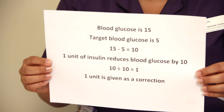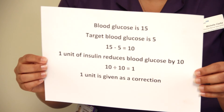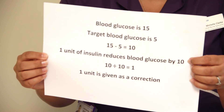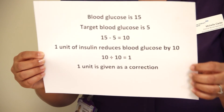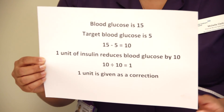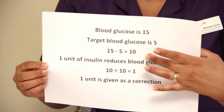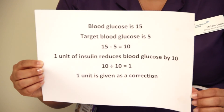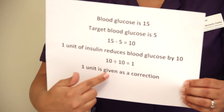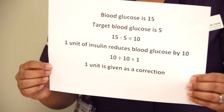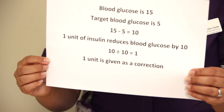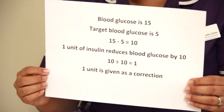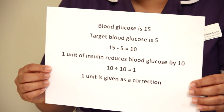You then need your calculation. So 1 unit of insulin reduces your blood glucose by 10. If you have got a difference of 10 and 1 unit of insulin reduces it by 10, you divide it. So it's 10 divided by 10, which equals 1, so you would give 1 unit of insulin as a correction.